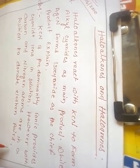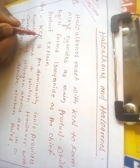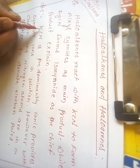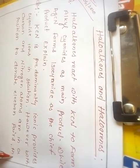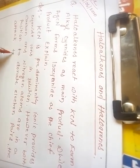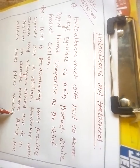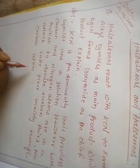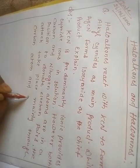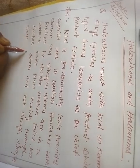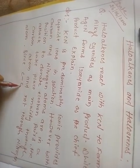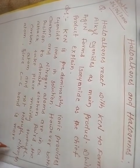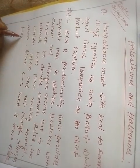Carbon and nitrogen atoms are in a position to donate electron pairs. The attack takes place mainly through the carbon atom, and not through the nitrogen atom, since the carbon-carbon bond is more stable than the carbon-nitrogen bond.